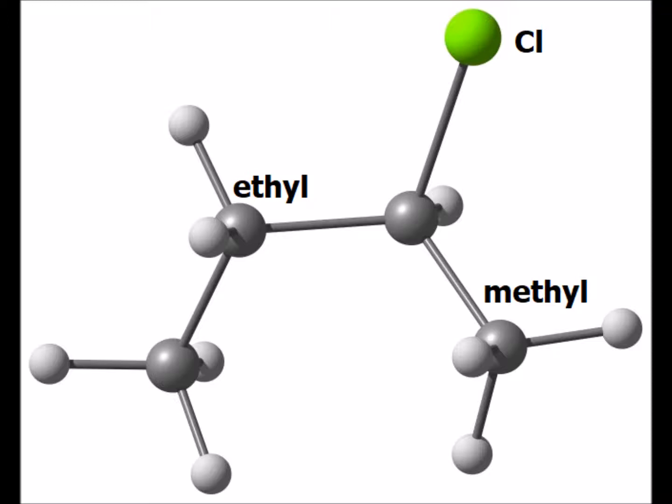Again, to apply the Cahn-Ingold-Prelog rules, we rotate the molecule such that the lowest priority group, the hydrogen, is pointing to the rear. And we notice that the other three groups are chlorine, ethyl, and methyl.